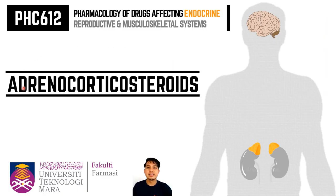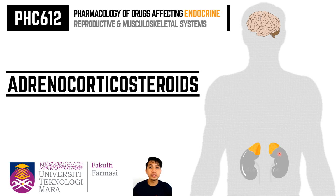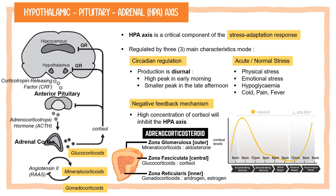Let's discuss the first topic: adrenocortical compounds. As mentioned, these are compounds created by the adrenal cortex. There are three types: glucocorticoids, mineralocorticoids, and androgens. We will now discuss the hypothalamic-pituitary-adrenal axis, known as the HPA axis.